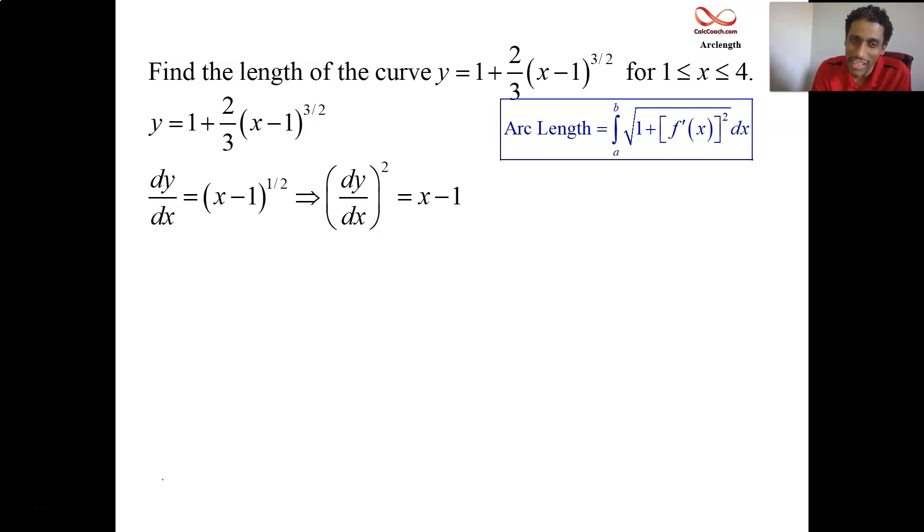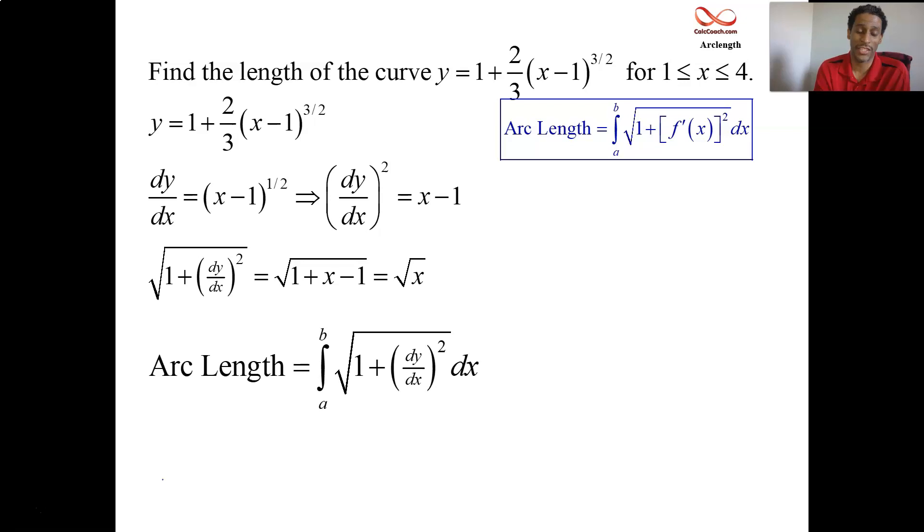This is almost too easy, what's going to happen here, because in step three, where our job is to add one. Well, if it's a minus one and you add one, they cancel out. Step four is to take the square root. And therefore, the thing that we are integrating in the formula is just the square root of x.